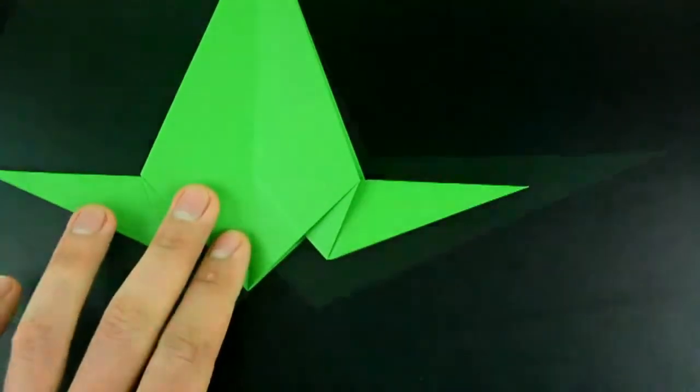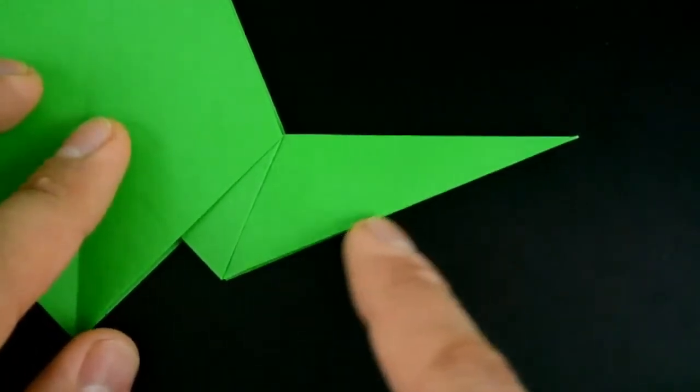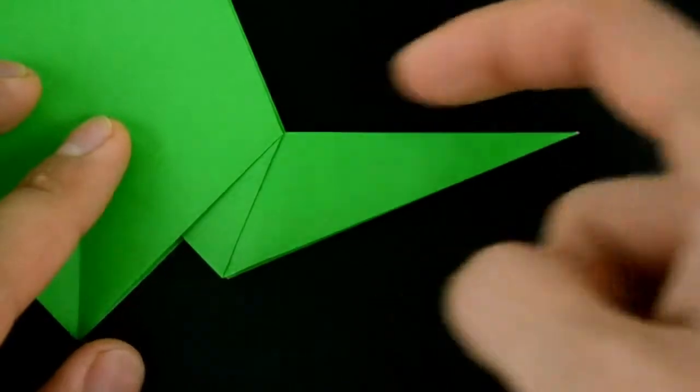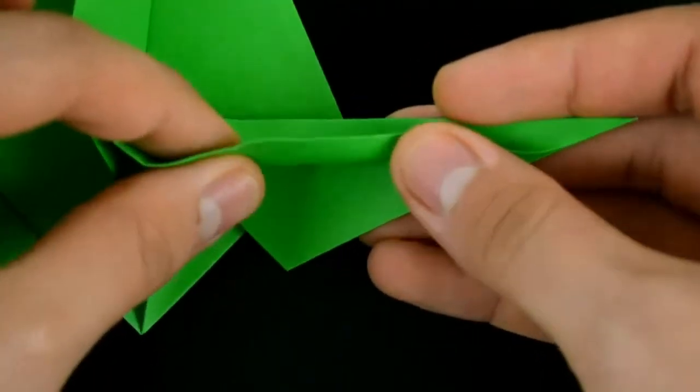And now a little attention again. On the right side, we need to fold this diagonal line to this other on the top. So just open a little and fold like this.